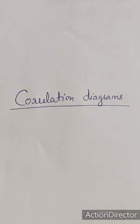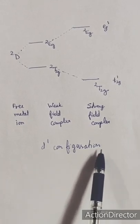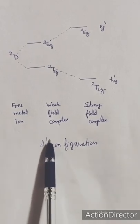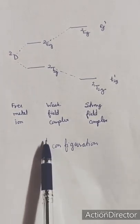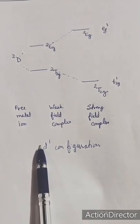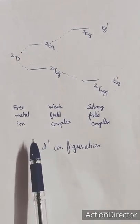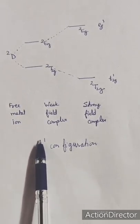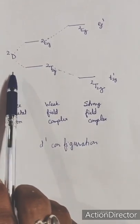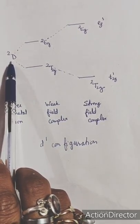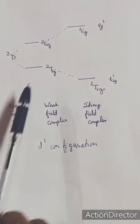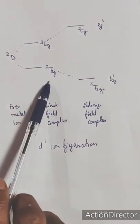This is the simplest correlation diagram, for the D1 configuration. Other configurations with n greater than 1 have more complicated correlation diagrams. In this diagram we can see that the magnitude of splitting and ordering of energy levels vary with the ligand field strength. This is the free metal ion, and this is the atomic term.